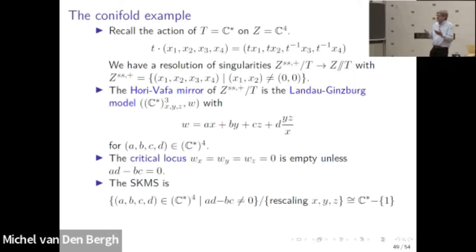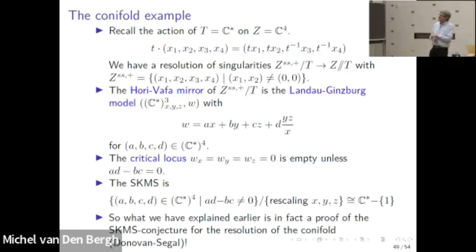The SKMS is the space of coefficients which are not on this hypersurface where something special happens. There's a big rescaling group acting on this: if we rescale the variables X, Y, and Z, we can compensate by rescaling the coefficients. Removing this gives ℂ* minus one point, which is again the sphere minus three points. So basically, what I explained earlier in a somewhat ad hoc way is actually a proof of the SKMS conjecture for the resolution of the conifold.